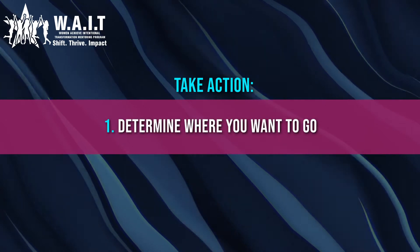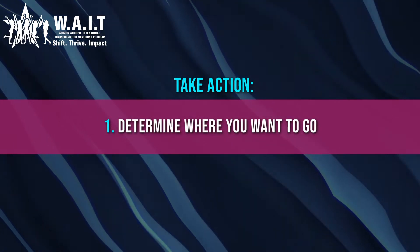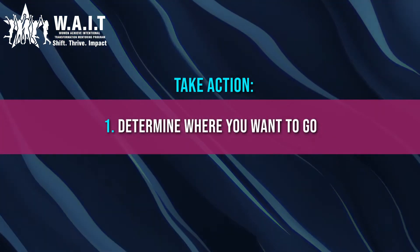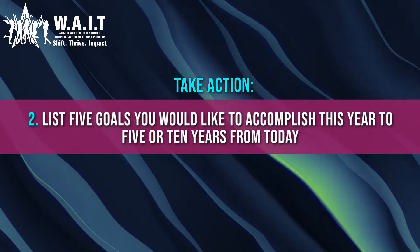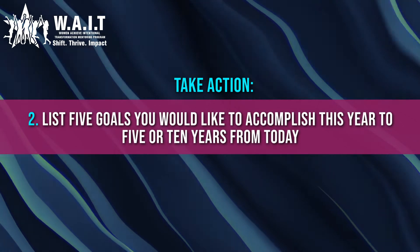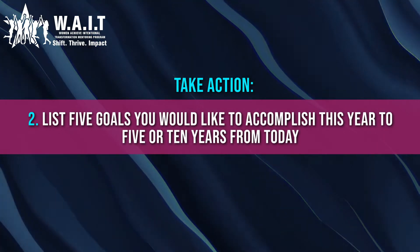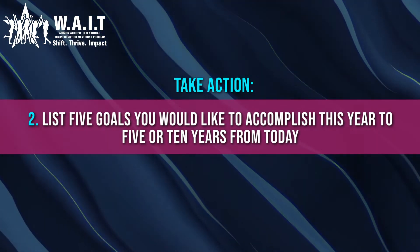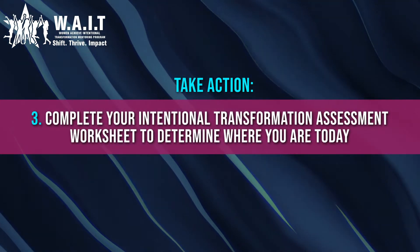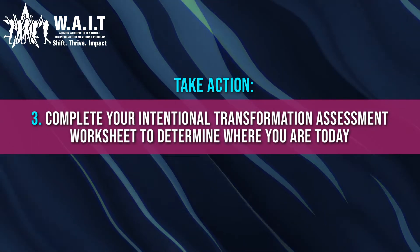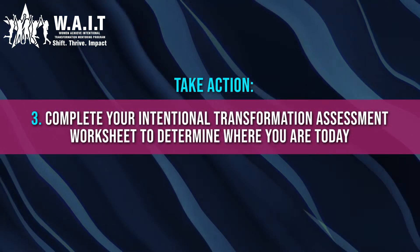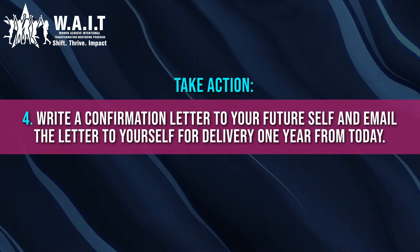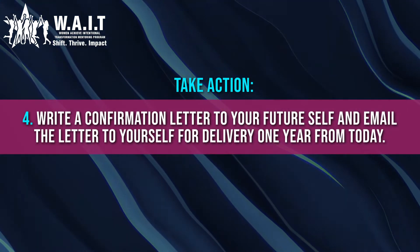During this lesson we will cover the following topics. Number one: determine where you want to go from here — whose lives do you want to impact and what steps do you need to take to get there? Number two: list five big picture goals over the next 12 months, five years, all the way out to 20 years. Number three: complete your intentional transformation assessment worksheet to determine where you are today. Number four: write a confirmation letter to your future self and email that letter for delivery one year from today.